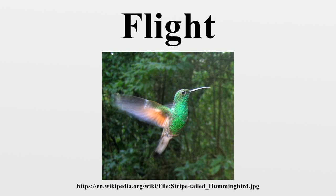Flying frogs use greatly enlarged webbed feet for a similar purpose. And there are flying lizards which fold out their mobile ribs into a pair of flat gliding surfaces. Flying snakes also use mobile ribs to flatten their body into an aerodynamic shape, with a back-and-forth motion much the same as they use on the ground. Flying fish can glide using enlarged wing-like fins and have been observed soaring for hundreds of meters. It is thought that this ability was chosen by natural selection because it was an effective means of escape from underwater predators. The longest recorded flight of a flying fish was 45 seconds.